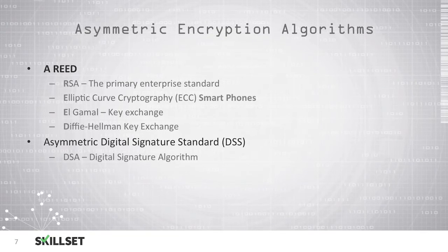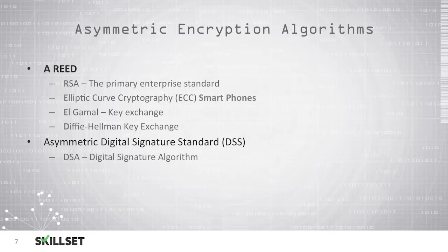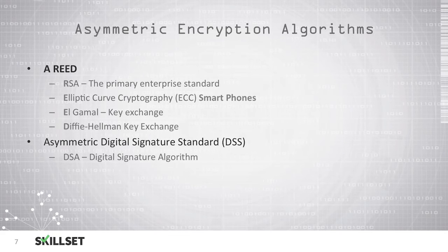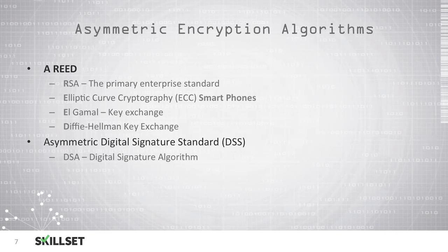There are several algorithms used for asymmetric encryption. One easy way to remember them is the mnemonic A-READ. A stands for asymmetric; R stands for RSA, the primary standard for asymmetric encryption; the first E stands for ECC, used by smartphones; the second E stands for ElGamal, used primarily for key exchange; and D stands for Diffie-Hellman, also used for key exchange. We also have DSA — the Digital Signature Algorithm — which is the asymmetric digital signature standard used for digital signatures.